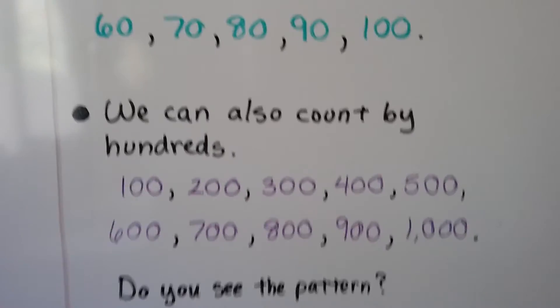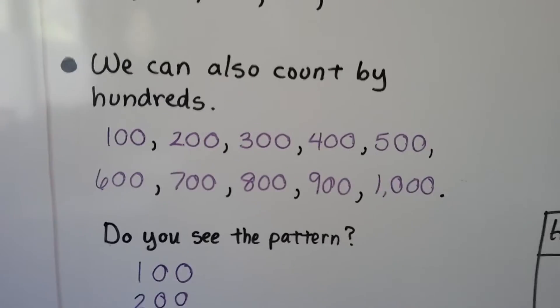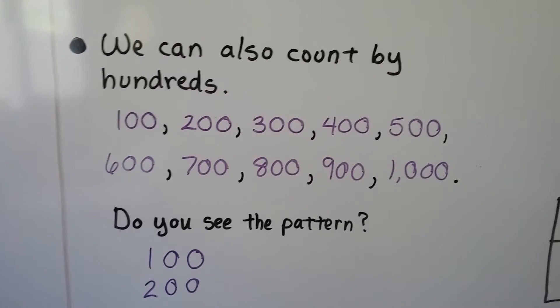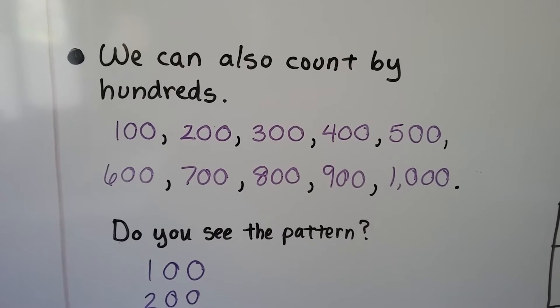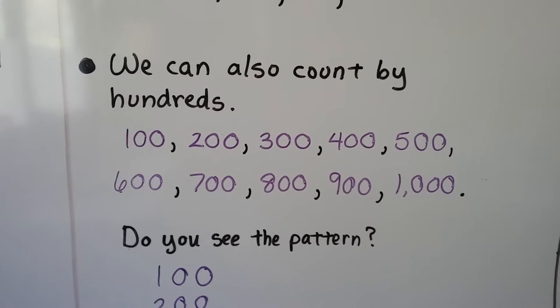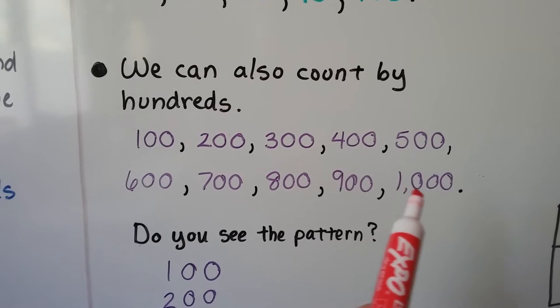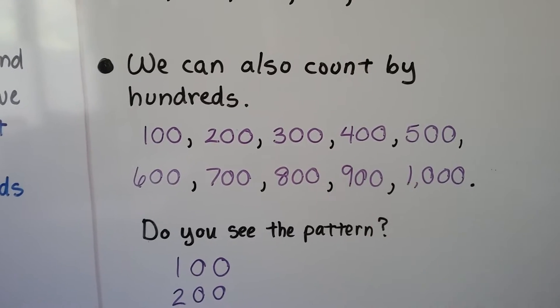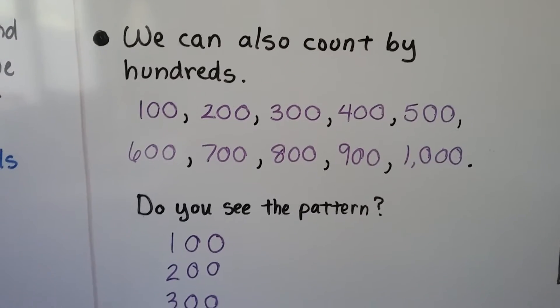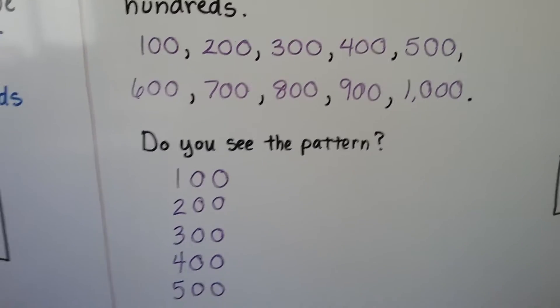Well, we can also count by hundreds, just like we did by tens. 100, 200, 300, 400, 500, 600, 700, 800, 900, 1000, which is actually ten one hundreds, but because there were two digits we had to move to the next place value, thousands. Can you see the pattern? Just like when we were counting by tens?